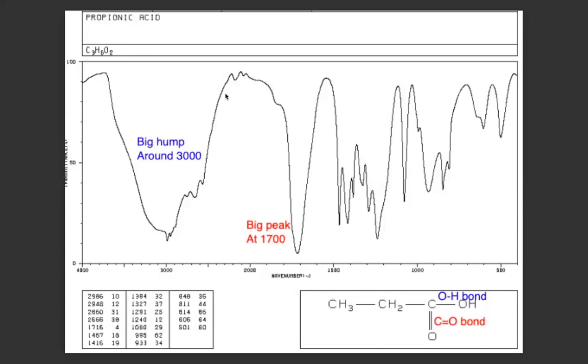Propanoic acid is an example I've chosen here because it has both the carbon-oxygen double bond and the OH single bond.